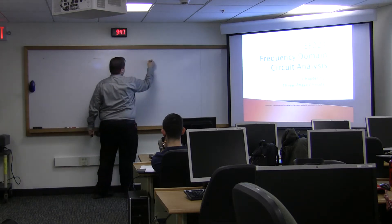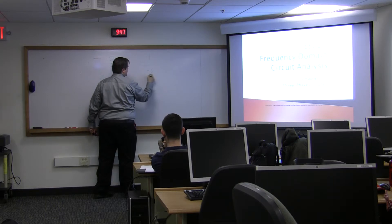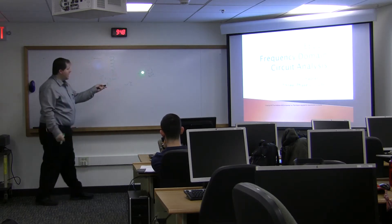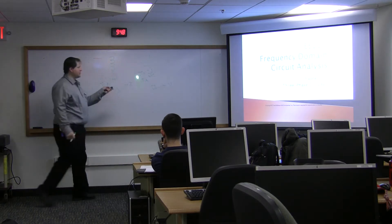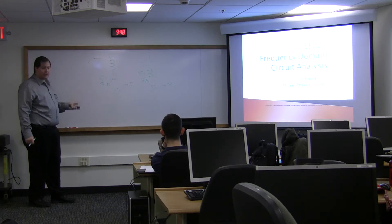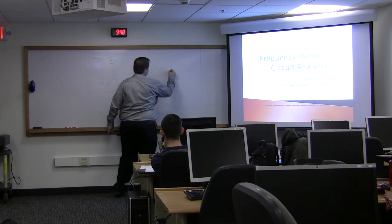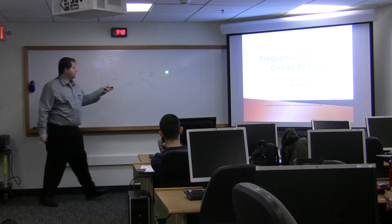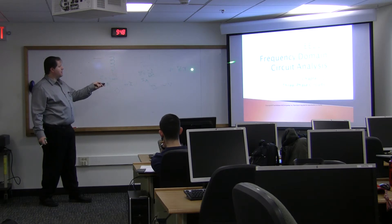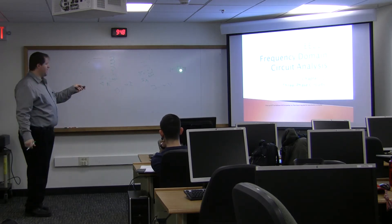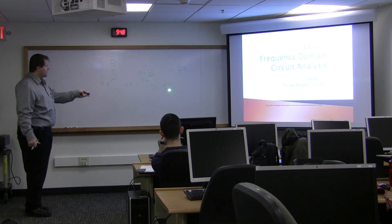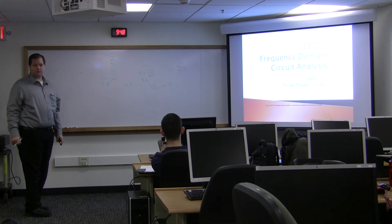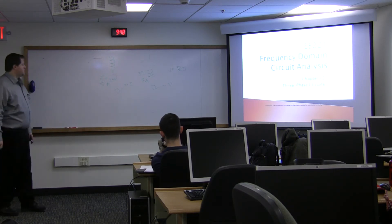Because the impedance of the capacitor has the minus J, it reverses that relationship. If I were to take this and put it into Ohm's Law, where the voltage is the impedance times the current, my current is my reference. I'm multiplying it by Z, which gives me a negative J, which is a minus 90 degree phase shift. So the voltage is 90 degrees lagging relative to the current. It's just that way to tell you which one's ahead of the other.